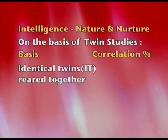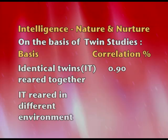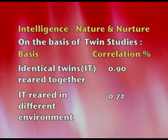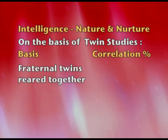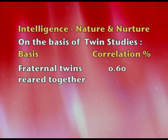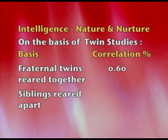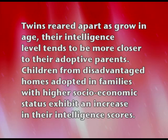Let's look at the data for nature. Identical twins, born from the same fertilized ovum and reared together, share 100% the same genetics. When brought up together, 90% of the time their intelligence correlates. Identical twins reared in different environments — where they are brought up by adoptive parents in different families — show a 72% correlation for intelligence. Fraternal twins, born from different fertilized ova but at the same time, when brought up together, show a 60% intelligence correlation. Siblings, sisters and brothers reared apart, show a correlation of 25%.